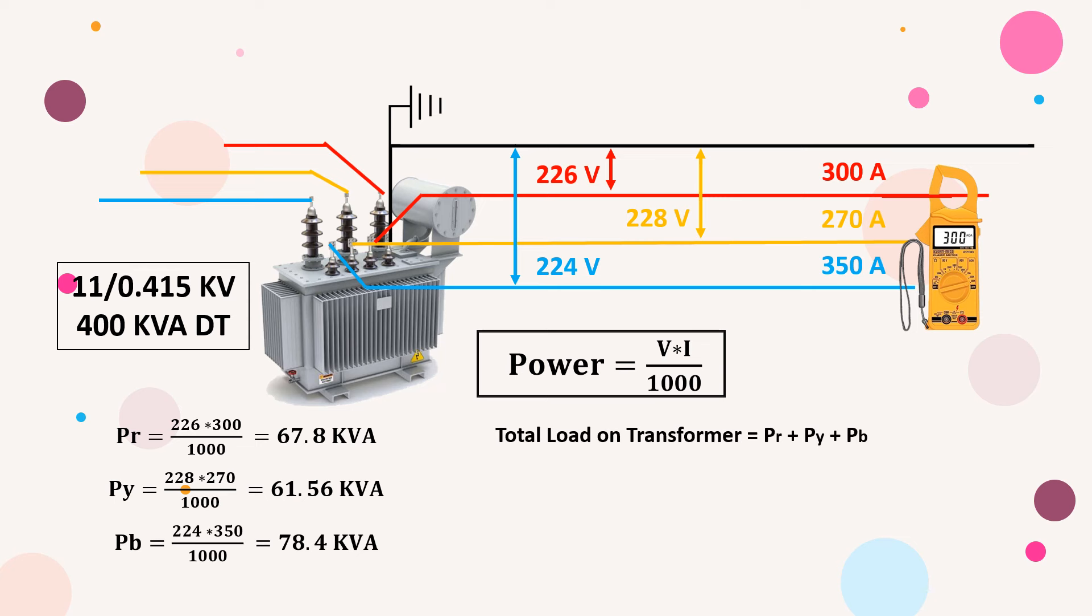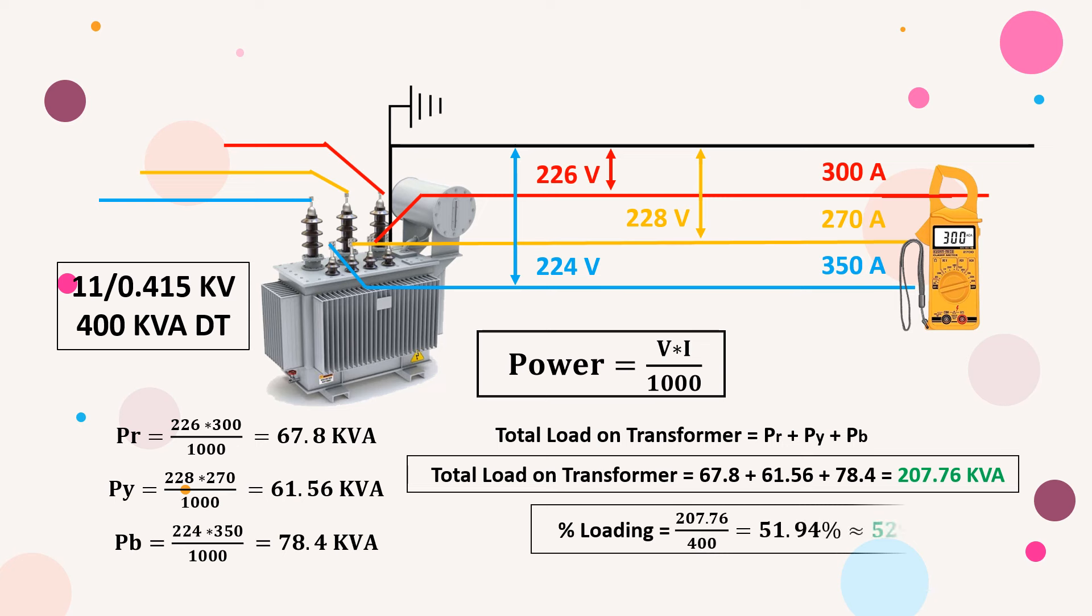Add these kVAs of all three phases and say that the total load connected on this transformer is 207.76 kVA. Now if you further divide this value by the transformer's rating, you can simply say that this transformer is 52% loaded.